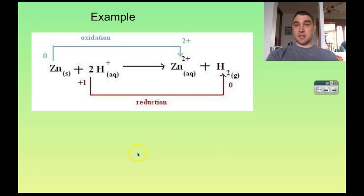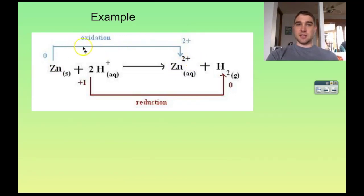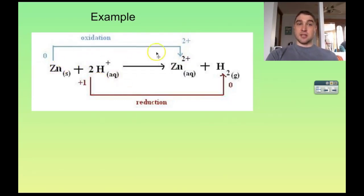Let's have a look. Zinc is losing electrons to produce zinc ions, so it is being oxidized. Because it is being oxidized, it is causing the reduction of the hydrogen ions. So the zinc is the reductant in this reaction.